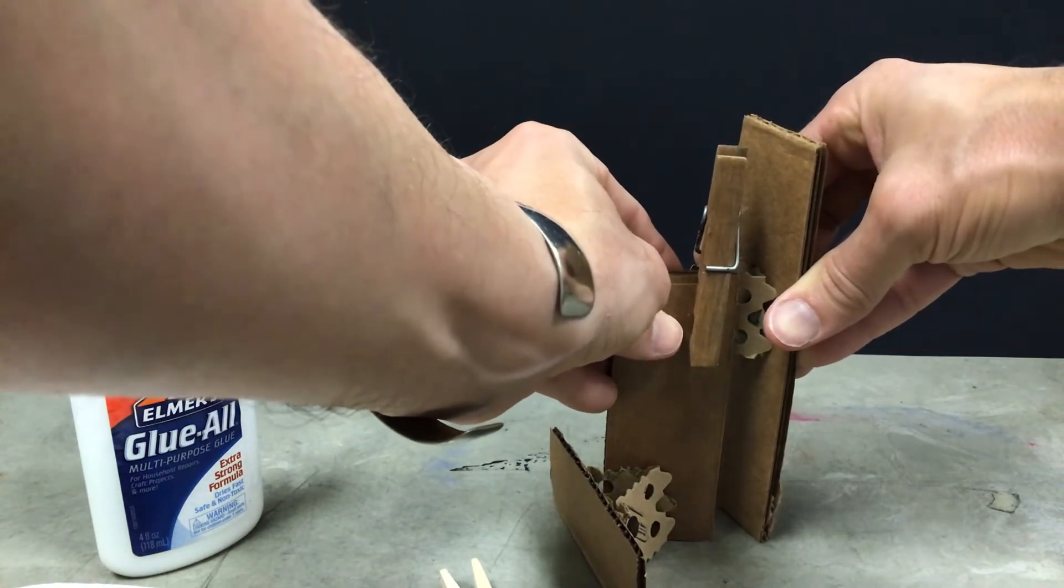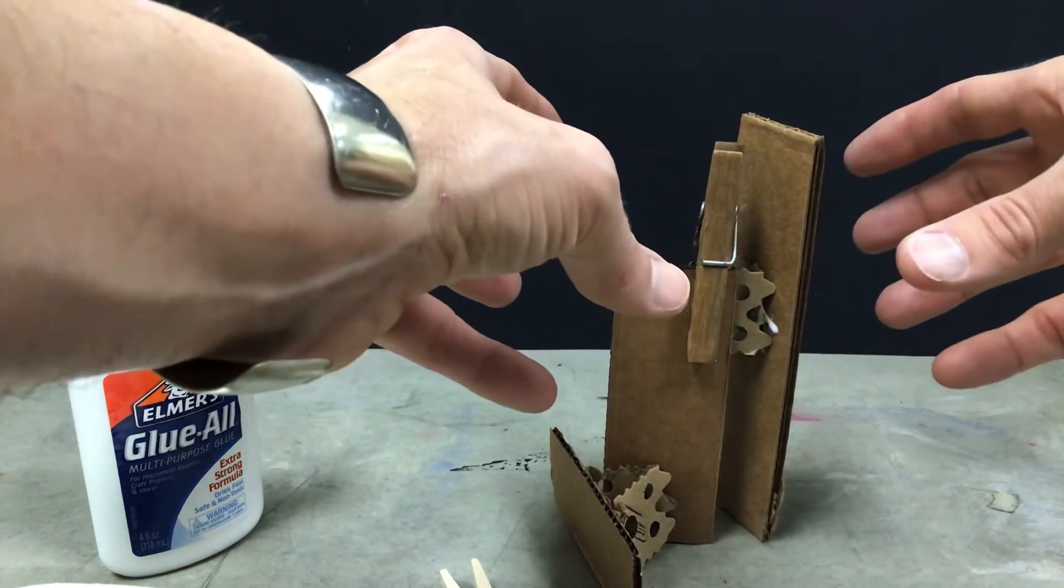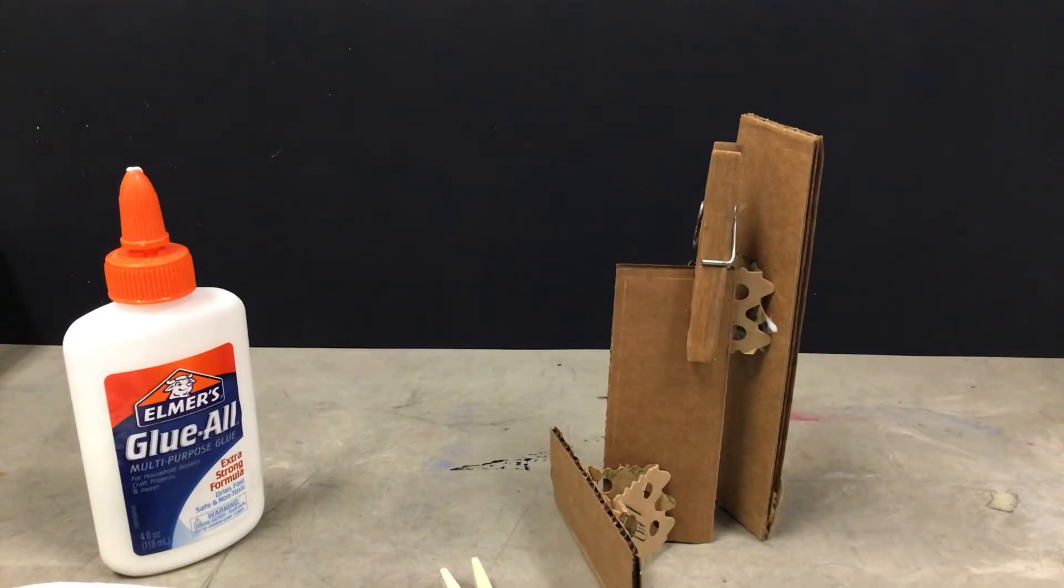Another trick that could work is you could put some pieces of tape on there to hold it while the glue is drying and sticking together, but just remember the tape's not very attractive, so obviously you're going to pull that off later.